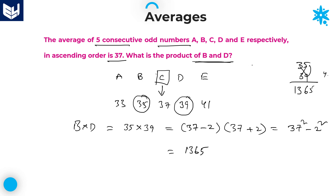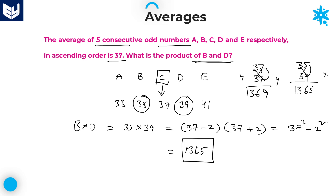To verify: 37² = 37 × 37. 7 × 7 = 49, carry 4. 21 + 21 = 42, plus 4 = 46, carry 4. 9 + 4 = 13. So 37² = 1,369. Then 1,369 − 4 = 1,365. In both cases the answer is 1,365. The product of B and D is 1,365.